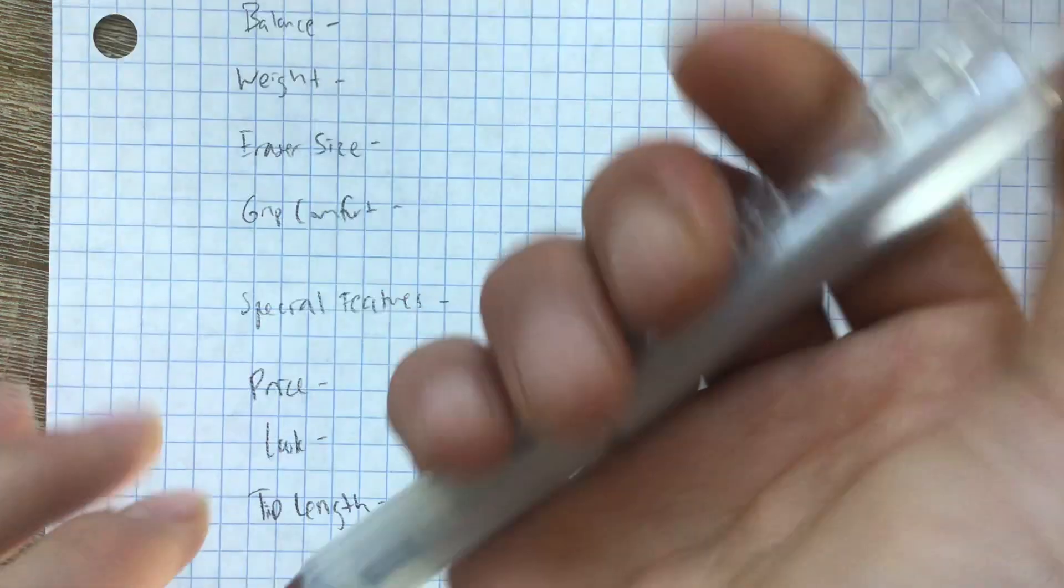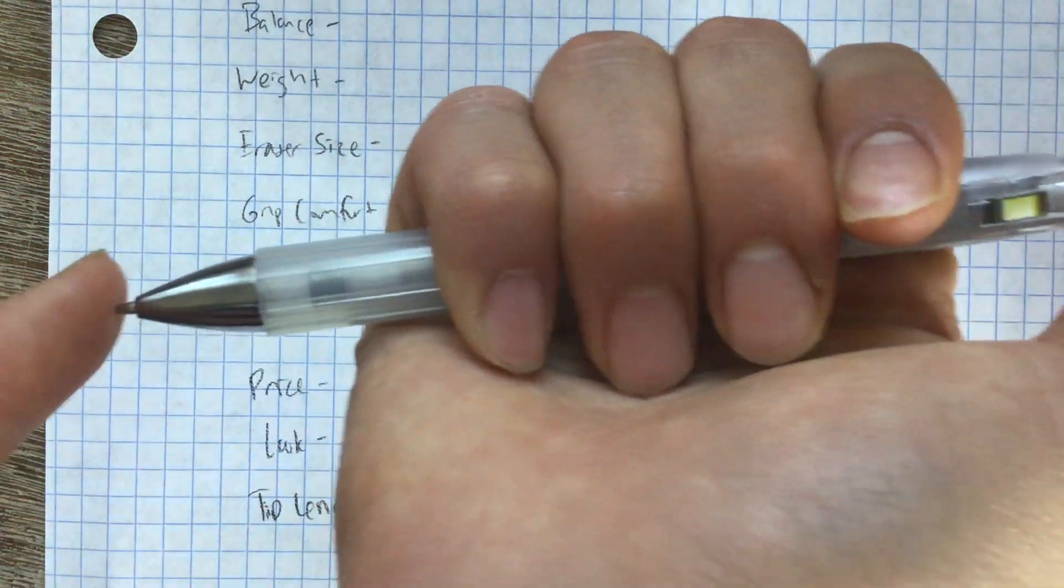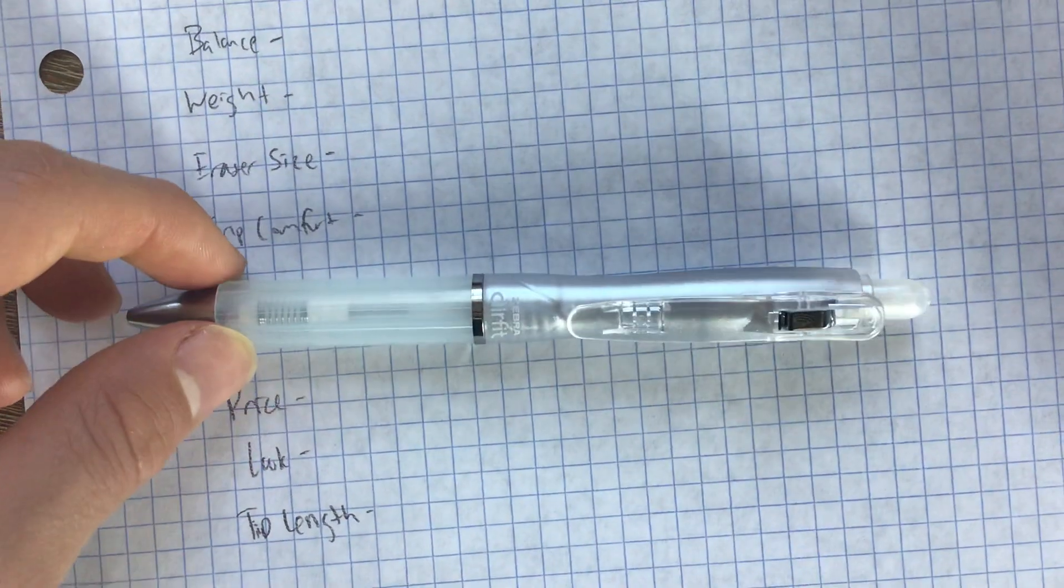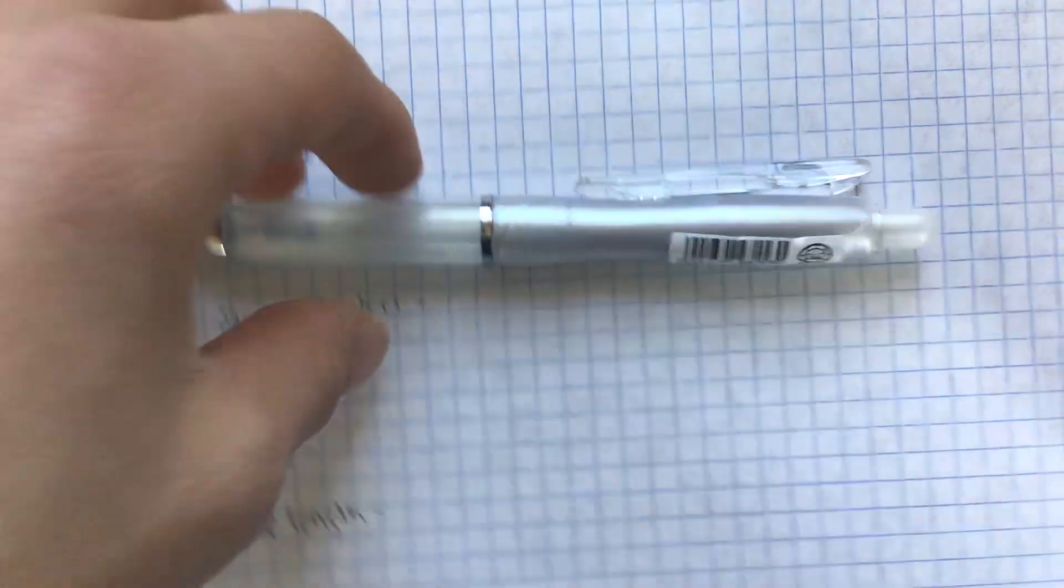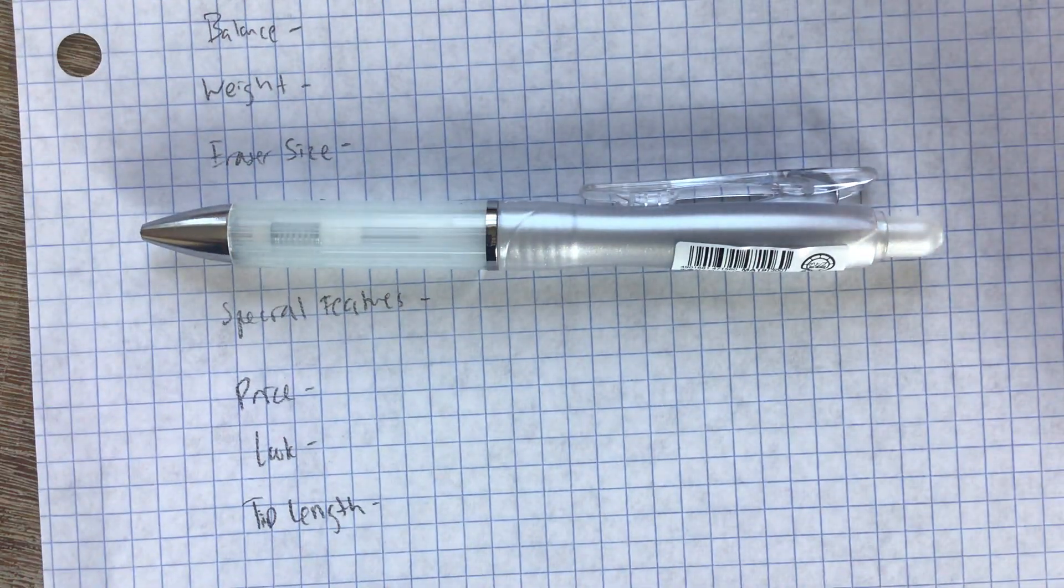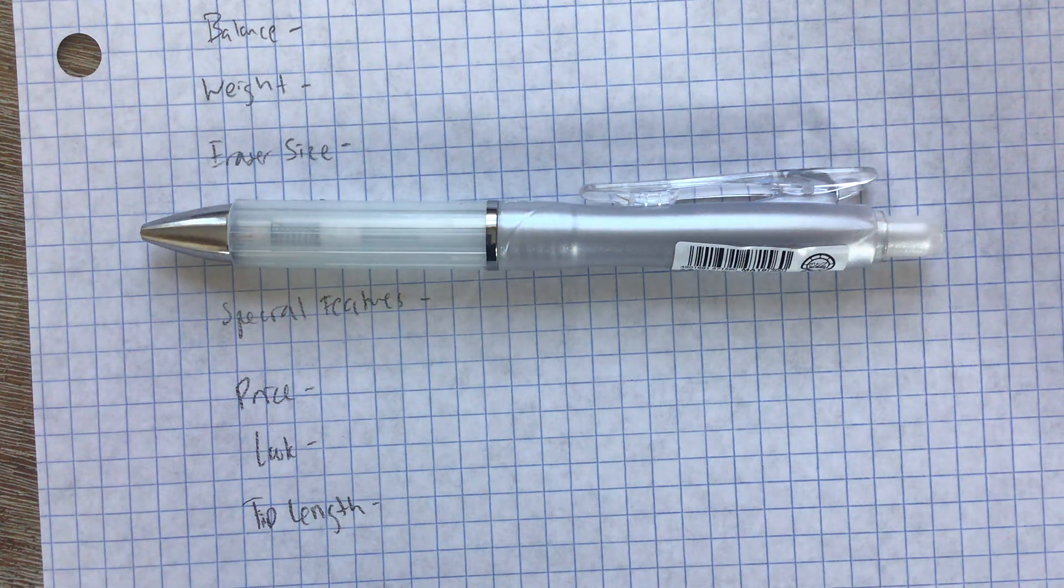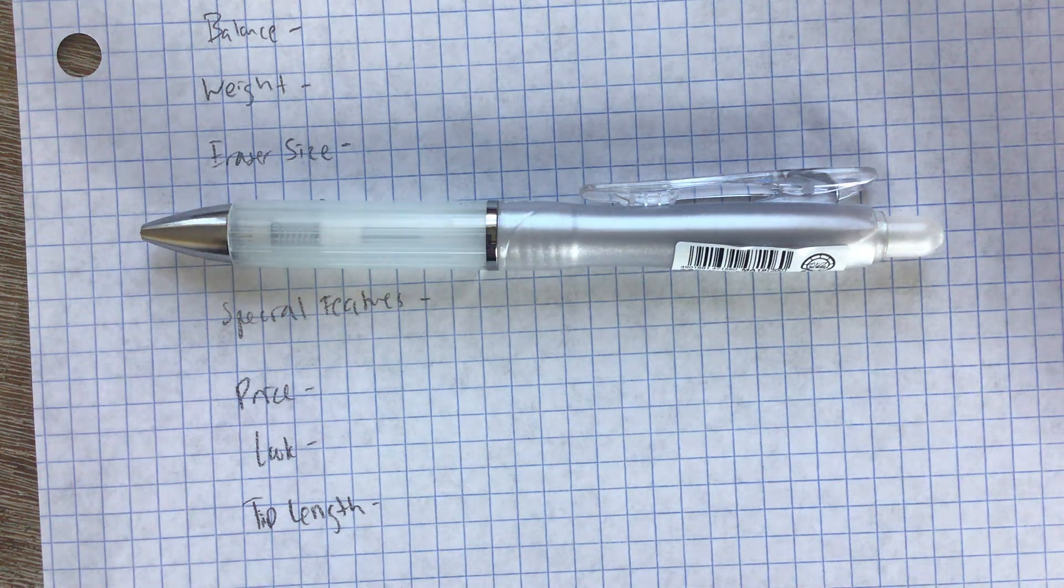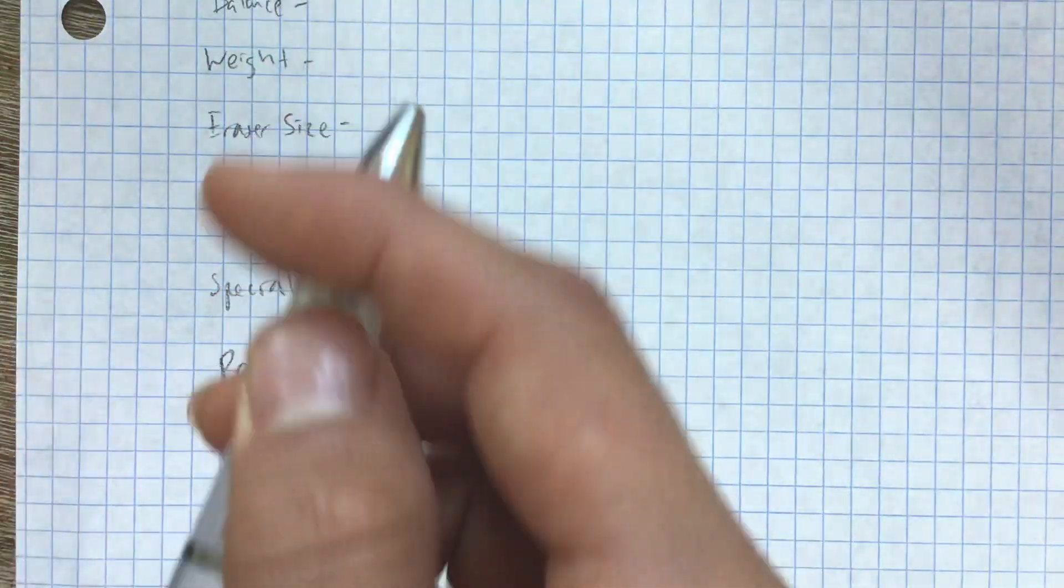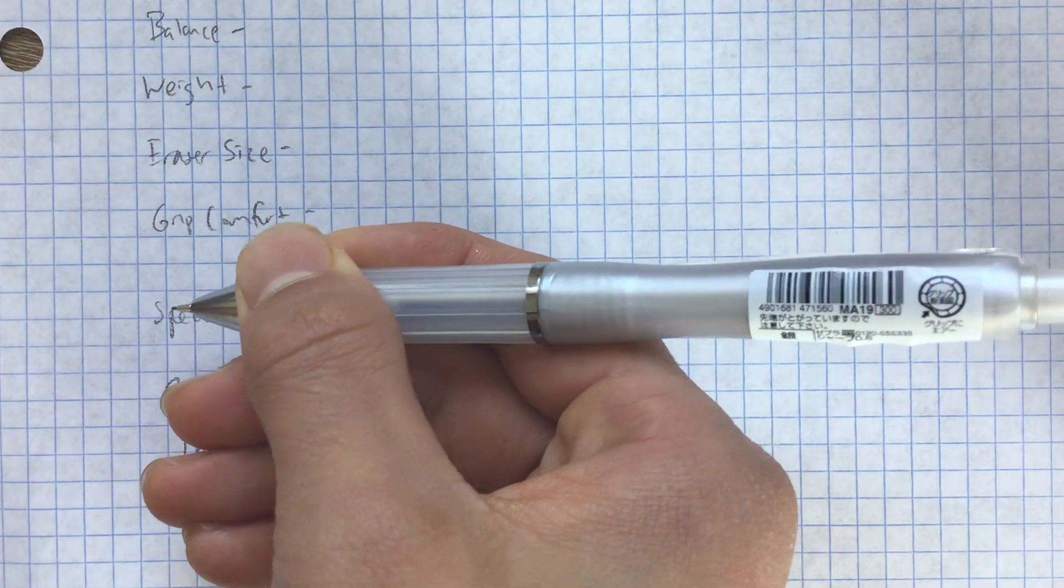So I first want you guys to know that this has a retractable tip. Now this could be a plus, this could be a minus because some people like retractable tips because it protects the tip of your pencil but you give up those benefits in stability because it might be a little bit wobbly. So with that being said, let's just go ahead and get right into it.